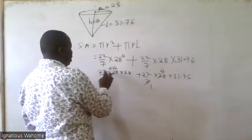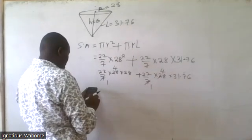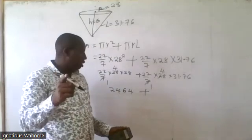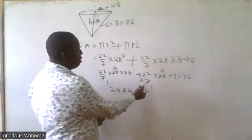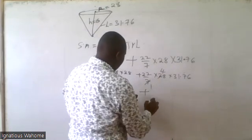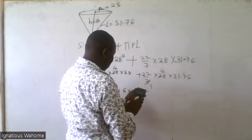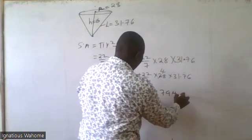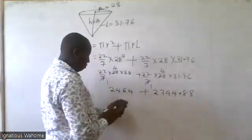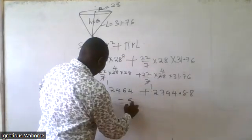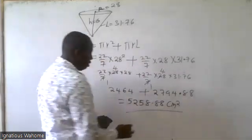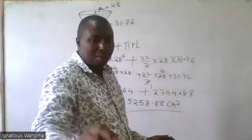22 divided by 7 gives 8.8 (after simplification with 28). 8.8 times 28 gives 2464 for the base area. Then for the curved surface: 22 over 7 times 28 times 31.76 gives 8.8 times 31.76, which equals 2794.88. Adding the two together: 2464 plus 2794.88 gives a total surface area of 5258.88 square centimetres.